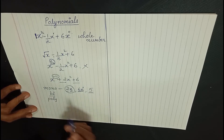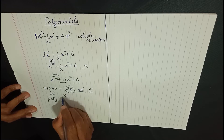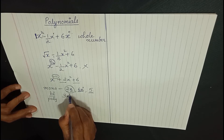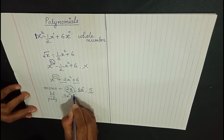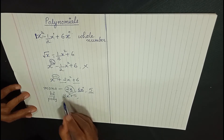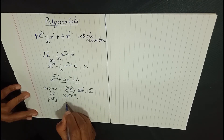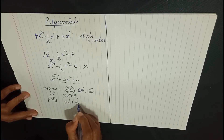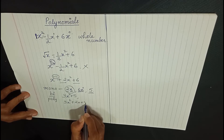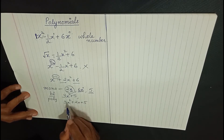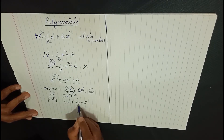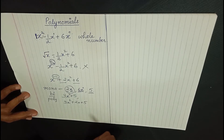In a binomial we have two terms, as the name suggests — bi means two. Similarly, if you have three terms, such polynomials are called trinomials. Tri means three.